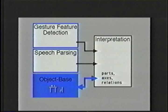An object base manages the objects and their appearance on the display. Object descriptions within the object base include part shapes, major axes, and spatial relations among objects and parts in the displayed scene.